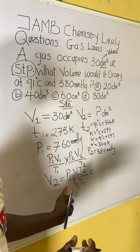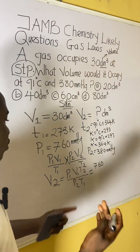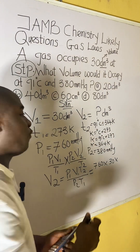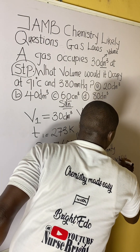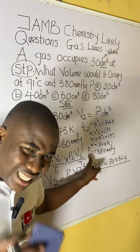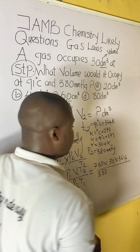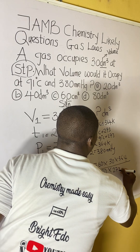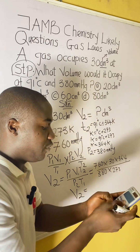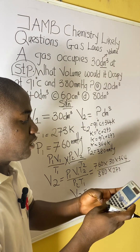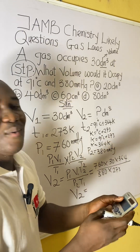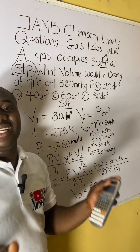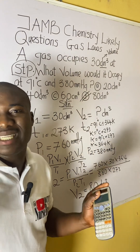Now substituting the parameters into the formula: V2 = (760 mmHg × 30 dm³ × 364 K) / (380 mmHg × 273 K). Using a calculator: V2 = (760 × 30 × 364) / (380 × 273) = 80 dm³. The unit is dm³, same as the initial volume. So the answer to this question is 80 dm³, which is option D.